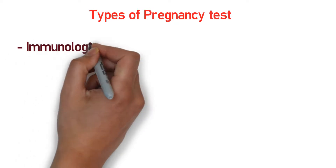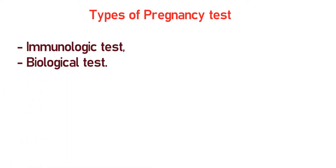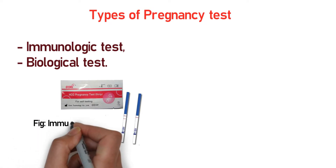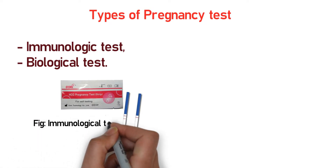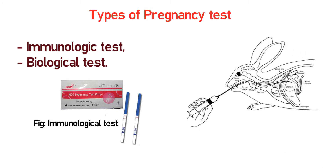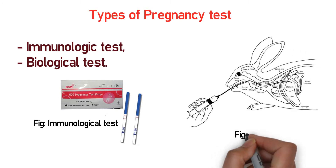Now let's talk about the types of pregnancy tests. Pregnancy tests are commonly done in two main types: number one is the immunologic test, and number two is the biological test.